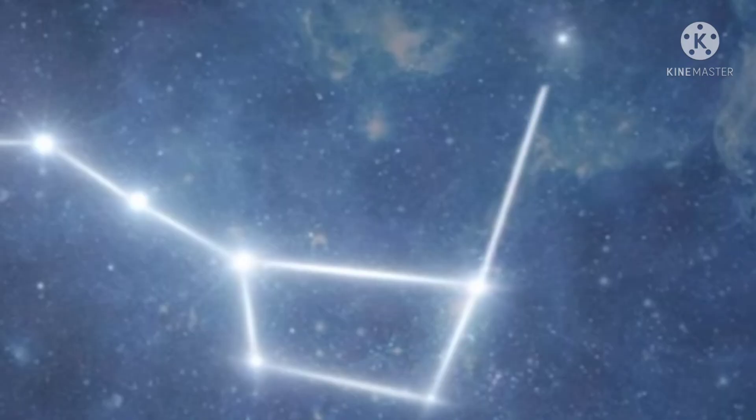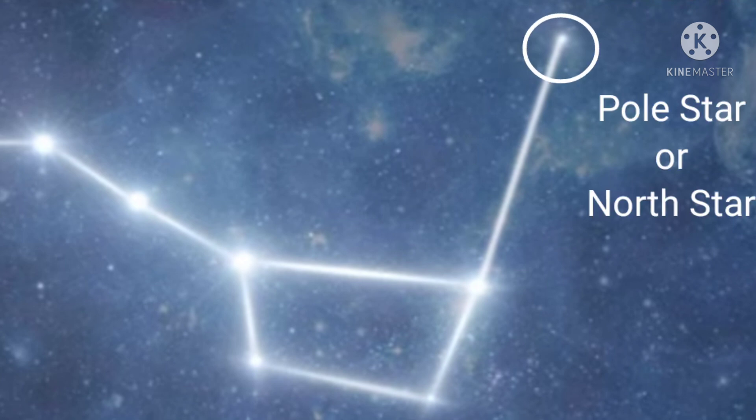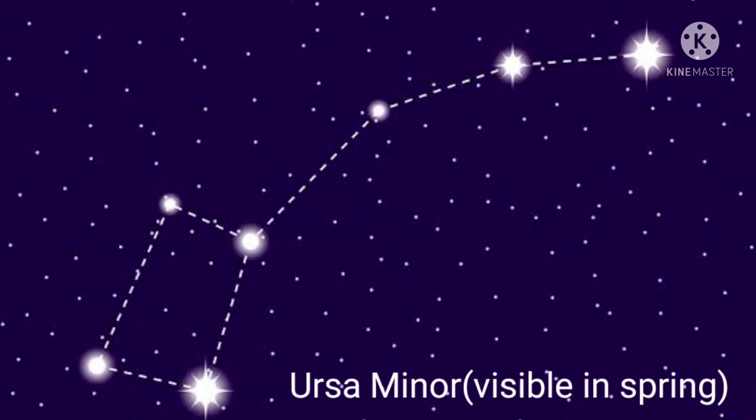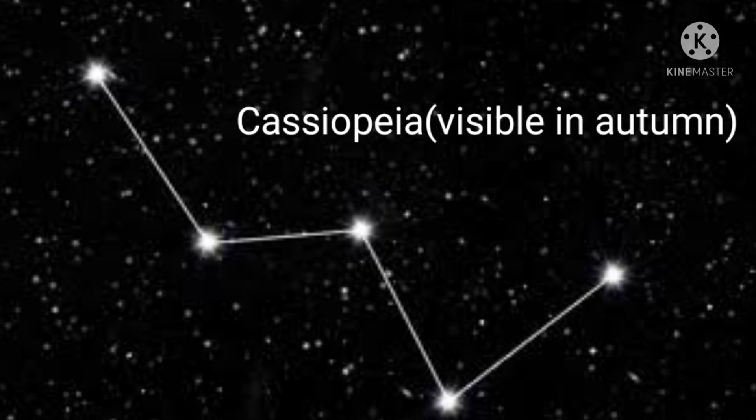This is because the line joining those points is in the direction of a special star called the Pole Star or North Star. Some of the other easily recognizable constellations are Orion, which is visible in winter, Ursa Minor or Small Dipper, which is visible in spring, and Cassiopeia, which is visible in autumn.